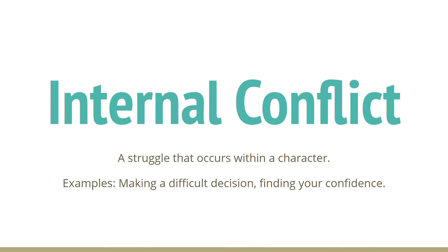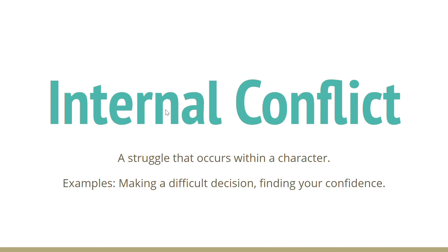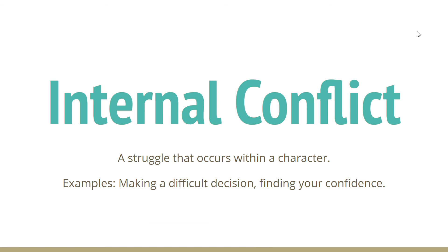The other type of conflict is internal — something that happens within one person. Maybe a character has no confidence and needs to believe in themselves, or they're struggling to make a difficult decision. That's internal conflict. At the end of class we practiced telling the difference between external and internal conflicts. If you have any questions, feel free to email me at adarnell@okcbs.org.